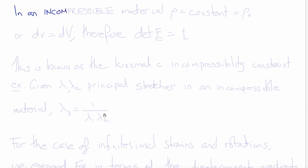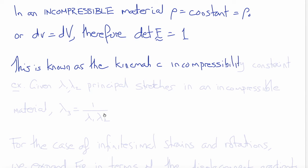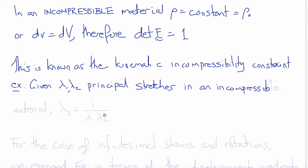If a material is incompressible, that means its density is constant and material volumes don't change. So rho equals rho_0, or dv equals dV. Therefore, conservation of mass states that det(F) equals 1 for an incompressible continuum. This is sometimes known as the kinematic incompressibility constraint. For example, given lambda_1 and lambda_2 as principal stretches in an incompressible material, we can use this constraint to show that lambda_3 must be 1 over (lambda_1 times lambda_2).